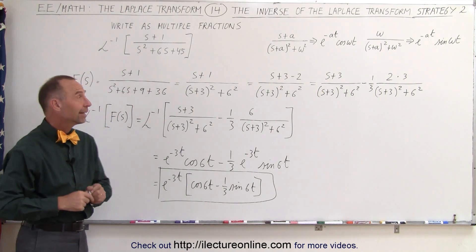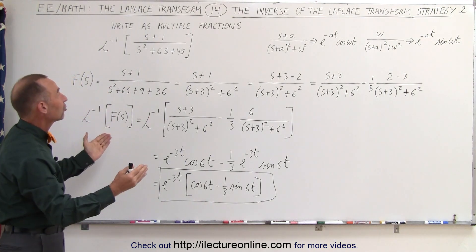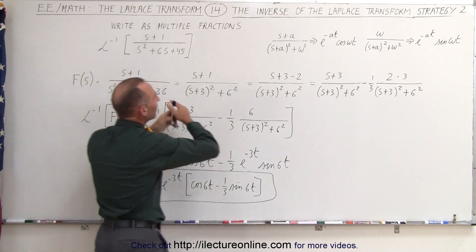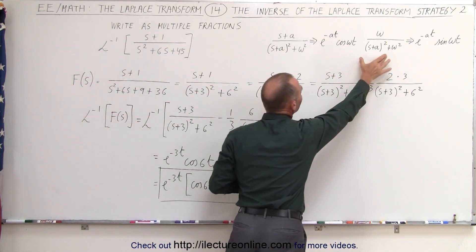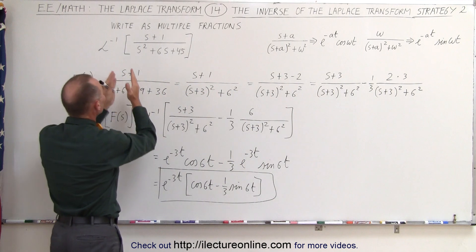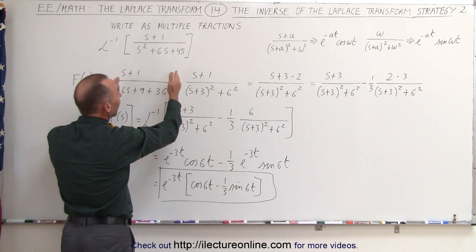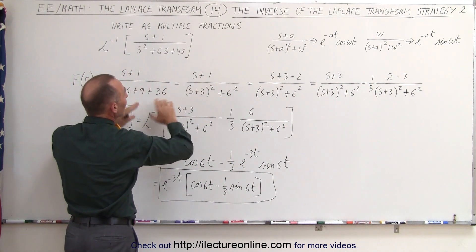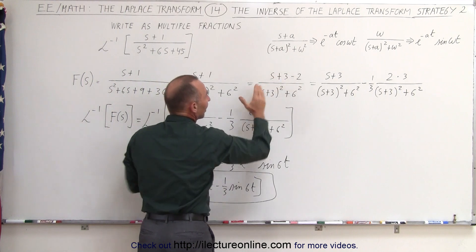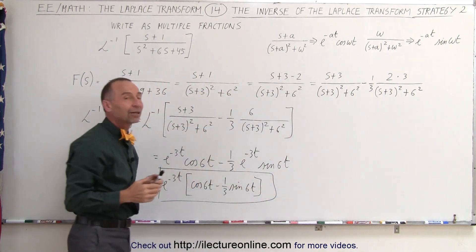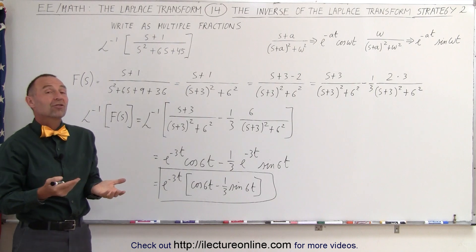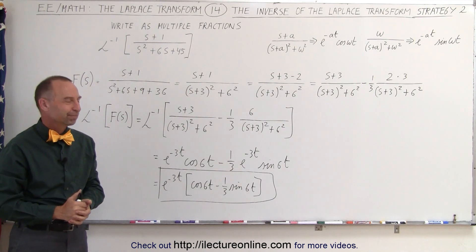Again, what's important here is the strategy. You look at this and realize you can make it look like that — in fact, we can separate the numerator into 2: S and plus 1. But before doing that, I make it look like this first, then I separate the numerators and find the inverse transform. That's the strategy that works in this case.